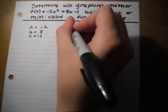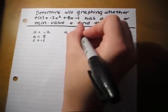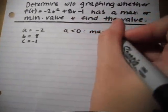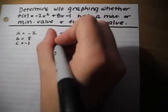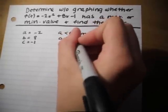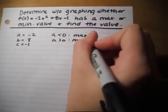If a is less than 0, it has a maximum at y. If a is greater than 0, it has a minimum at y.